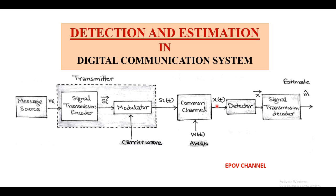This received signal is again converted into an observation vector denoted by capital X vector, which is further decoded and we get the estimated symbol represented by m-cap. Now we explain each block in detail.